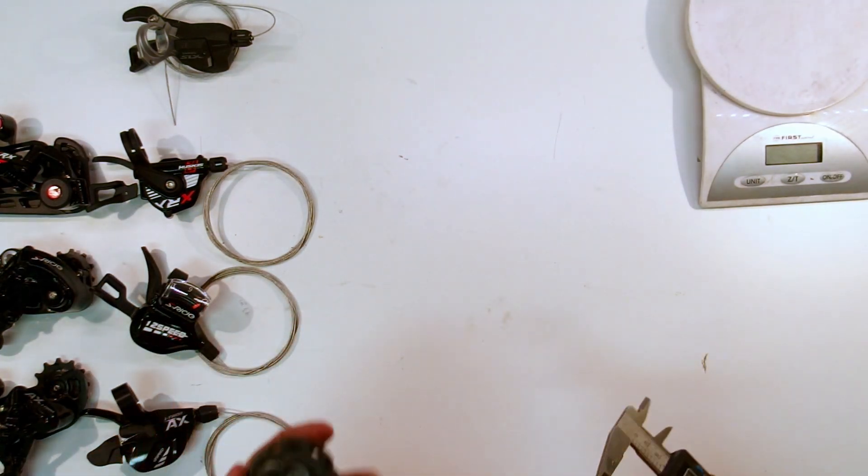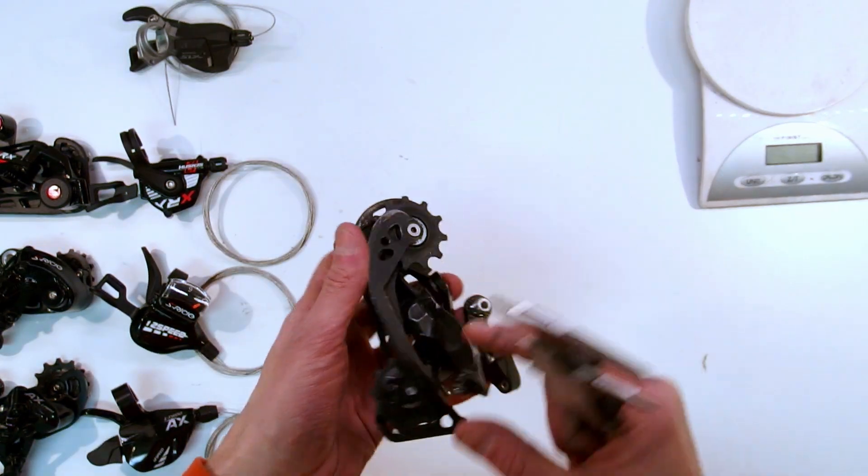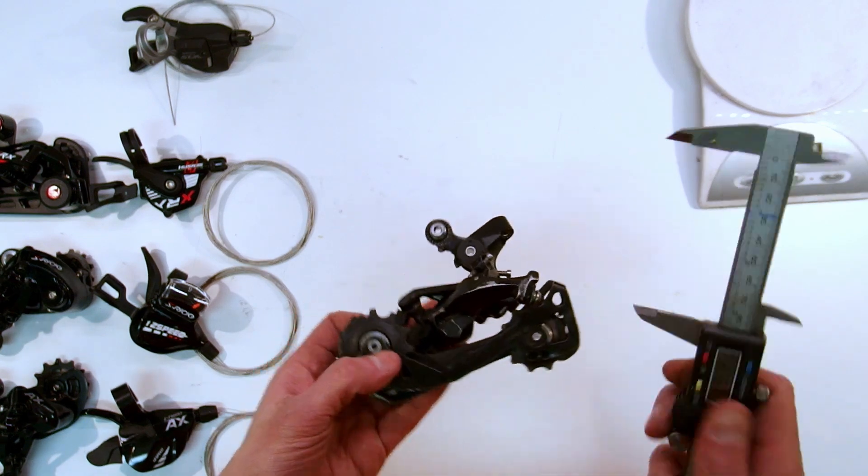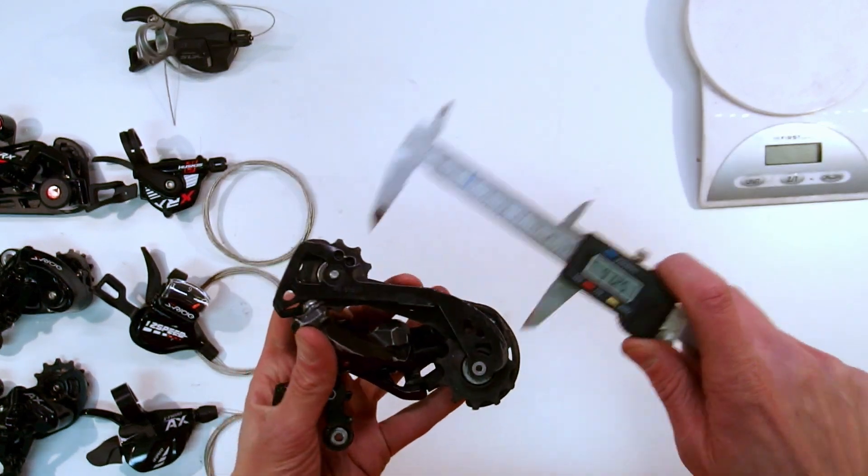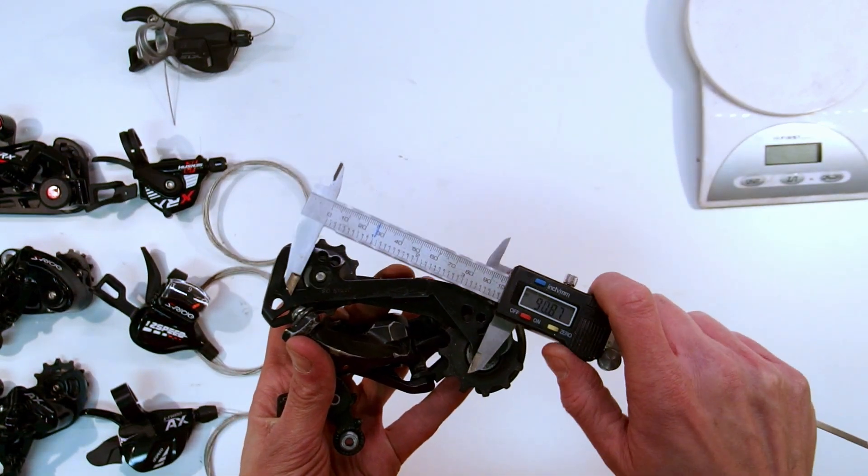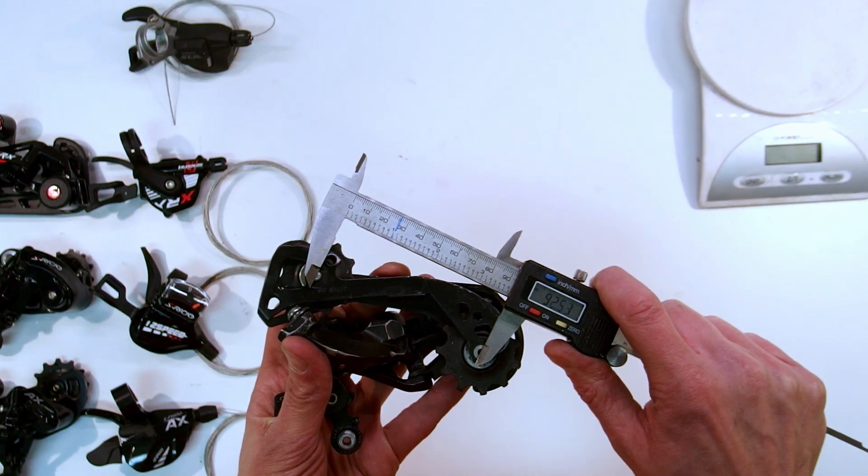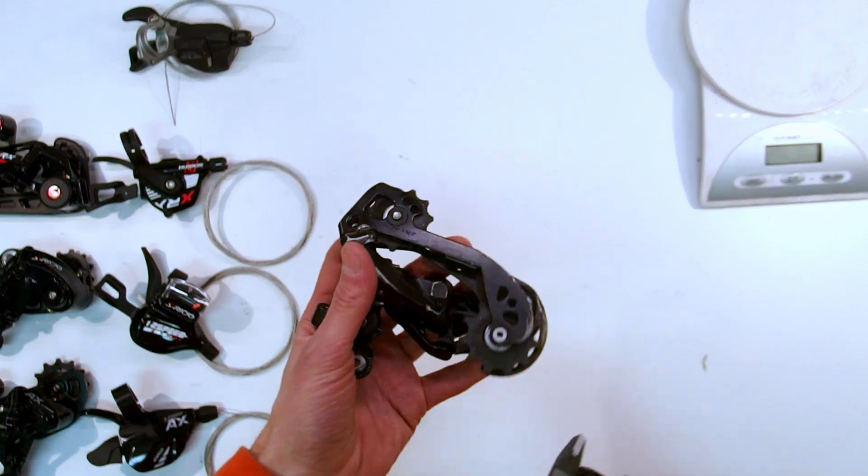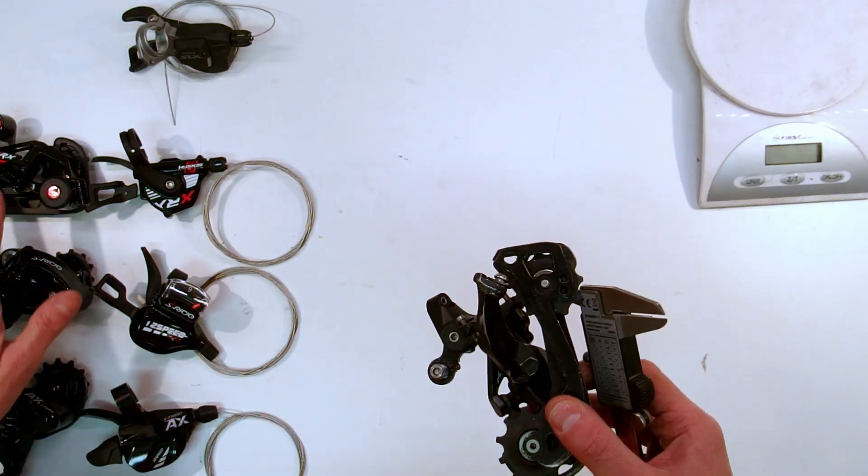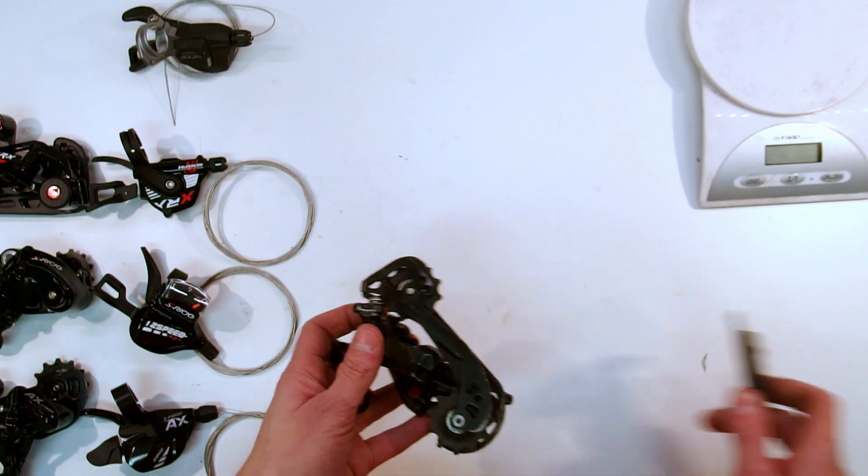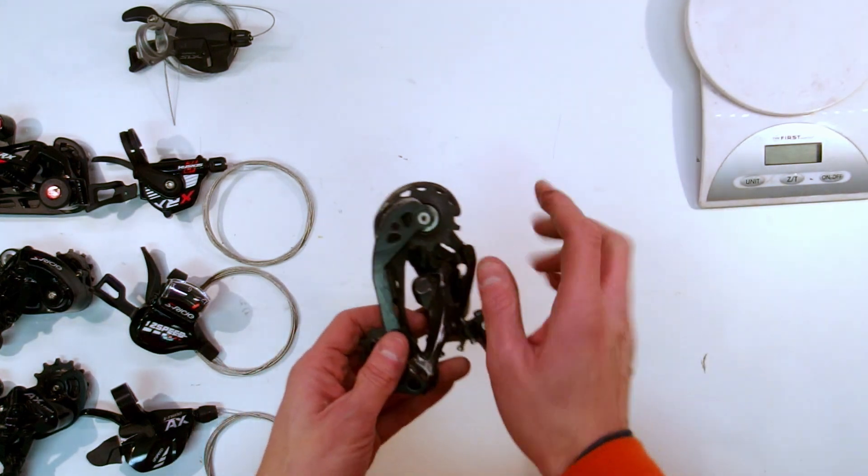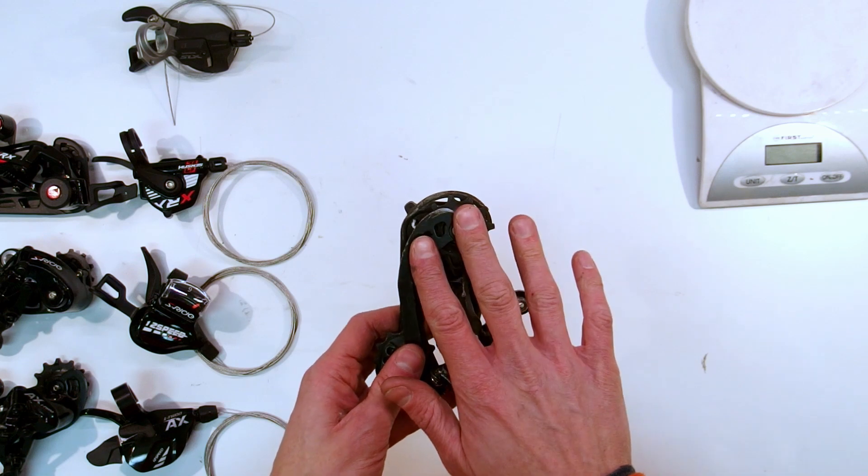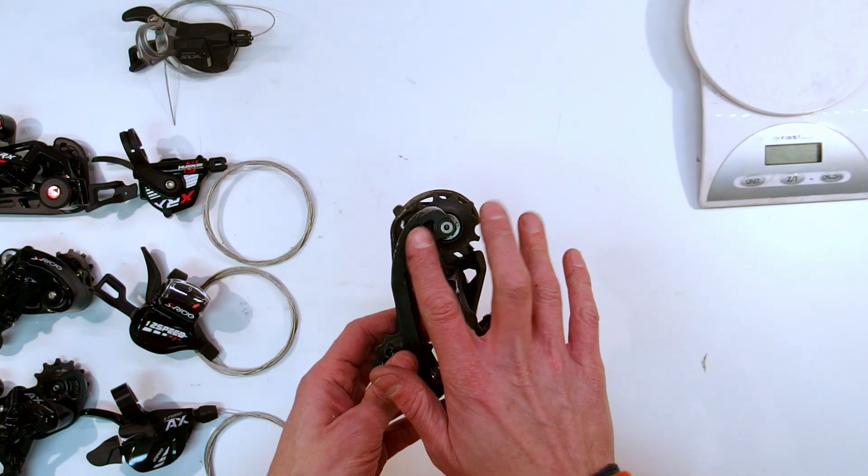And what do we have here? The pulleys are tall teeth on the top, smaller tooth on the bottom. The cage length is 92.5mm long. But this is a GS version, so the SGS, which would be equivalent of these, is even longer than this. The offset of the top pulleys is fairly minor, but higher than on other 10-speed derailleurs, but much lower than on the 12-speed.